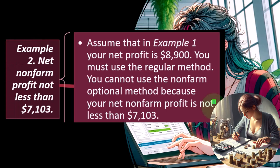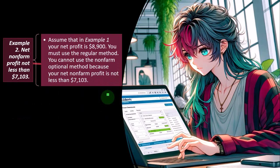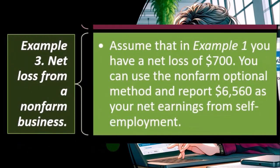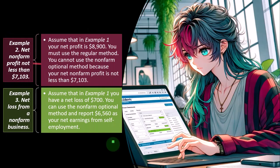Example two: net non-farm profit not less than $7,103. Assume that in example one your net profit is $8,900. You must use the regular method — you cannot use the non-farm optional method because your net non-farm profit is not less than $7,103. Example three: net loss from a non-farm business. Assume that in example one you have a net loss of $700. You can use the non-farm optional method and report $6,560 as your net earnings from self-employment.